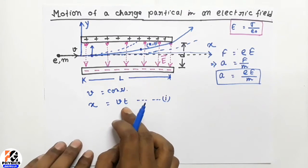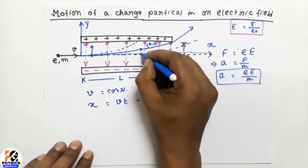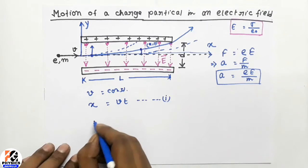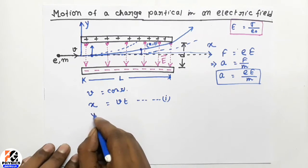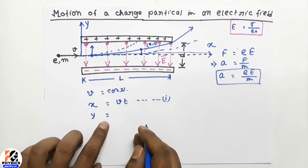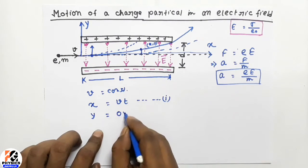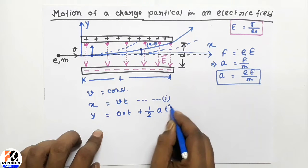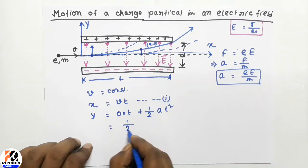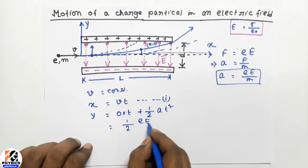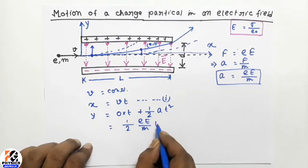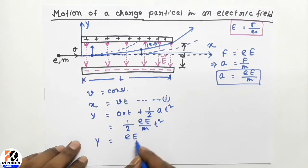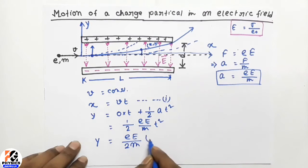In the same time, the electron is also deflected along the y direction. In the vertical direction, the initial velocity is zero, so y equals zero times t plus one-half times a times t squared, which gives y equal to one-half times eE by m times t squared. So the y coordinate is equal to eE by 2m times t squared. This is equation 2.